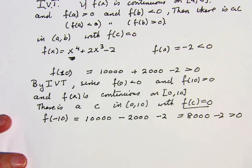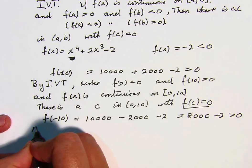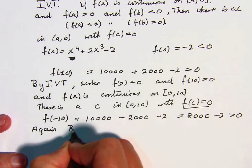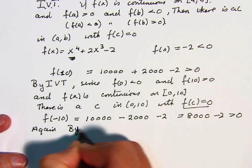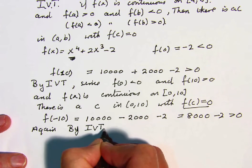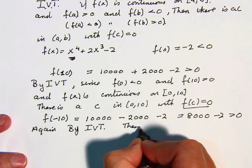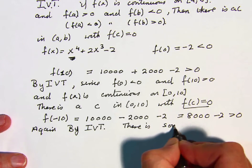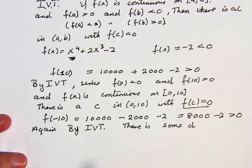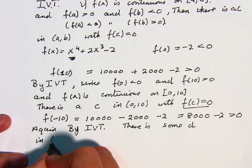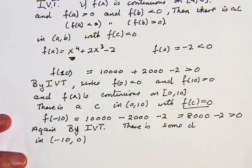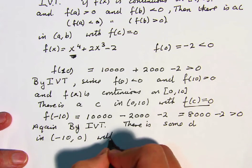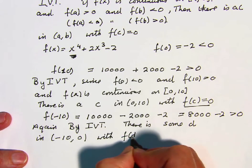So again, by the Intermediate Value Theorem, there is some d in the interval, the open interval from minus 10 to 0, with f of d equals 0.